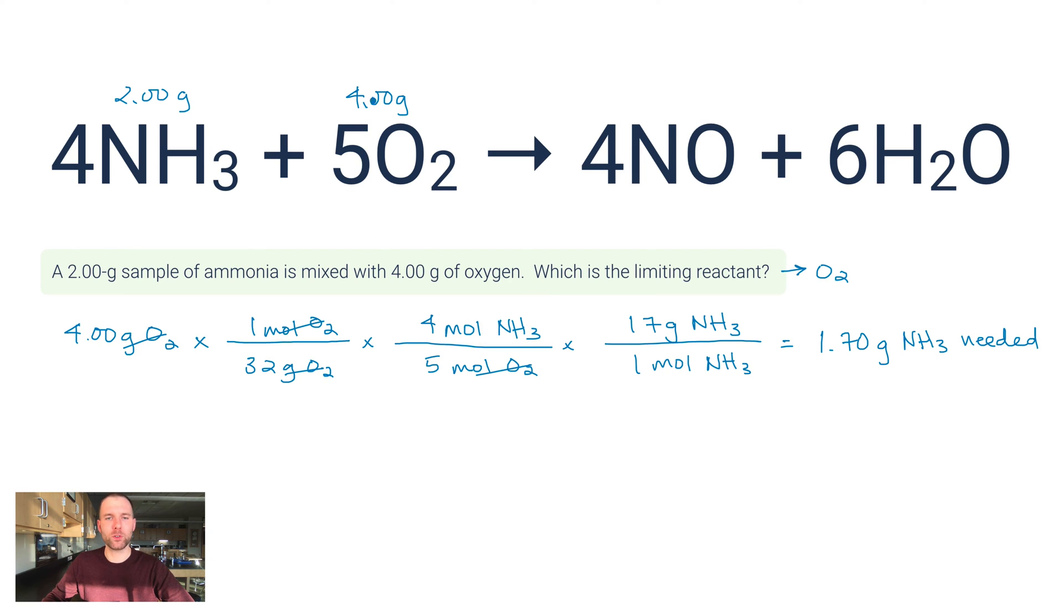So what that means is NH3 is my excess reactant and O2 is therefore my limiting reactant. All 4 grams of O2 will react with only 1.7 grams of the other reactant. There's more of the other reactant there, so that's how I know this is my excess reactant and this is my limiting reactant.